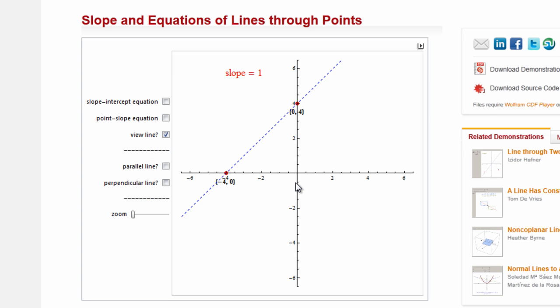In the last video, I had this little applet up here. This applet is a Wolfram Demonstrations Project applet. You can Google Wolfram Demonstrations Project and it'll come up with a nice, beautiful website, and you can search through a bunch of their applets and download a plug-in for your browser that'll allow you to play with this stuff. I want to use this applet to talk about a very important property of slope for linear equations.